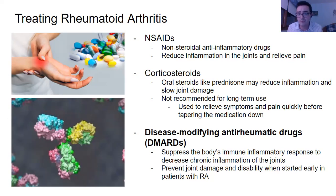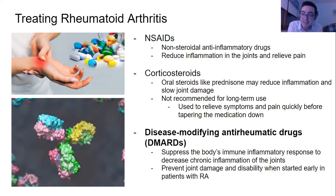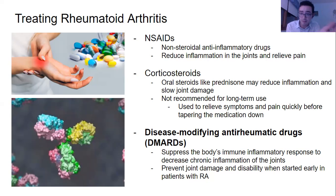What we recommend for patients with rheumatoid arthritis are disease-modifying anti-rheumatic drugs, or DMARDs. DMARDs suppress the body's immune inflammatory response to decrease chronic inflammation of the joints — stopping the immune system from even getting to the joint to attack it. This prevents joint damage and disability, especially when started early, because unlike NSAIDs and corticosteroids which only treat symptoms, DMARDs actually modify the progression of the disease to give patients a better quality of life.